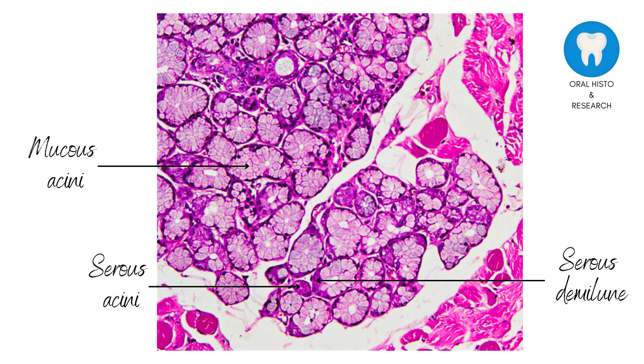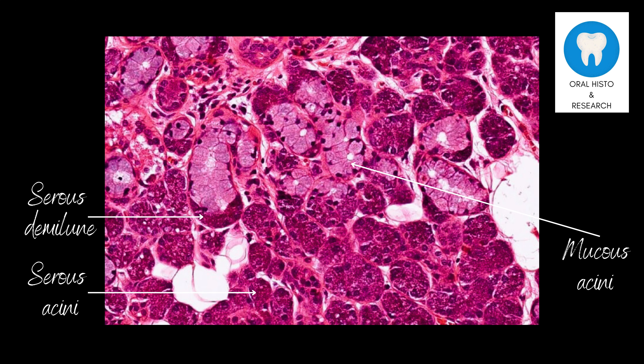Serous demilunes are specialized structures found in the submandibular glands. These demilunar cells are named for their crescent or half-moon shape. Histologically, serous demilunes appear as small crescent-shaped clusters of serous cells that partially envelop or cap the mucous acini. They reflect the complex histological organization of mixed salivary glands, where different types of secretory units work synergistically to produce saliva with diverse properties suited for lubrication and digestion.